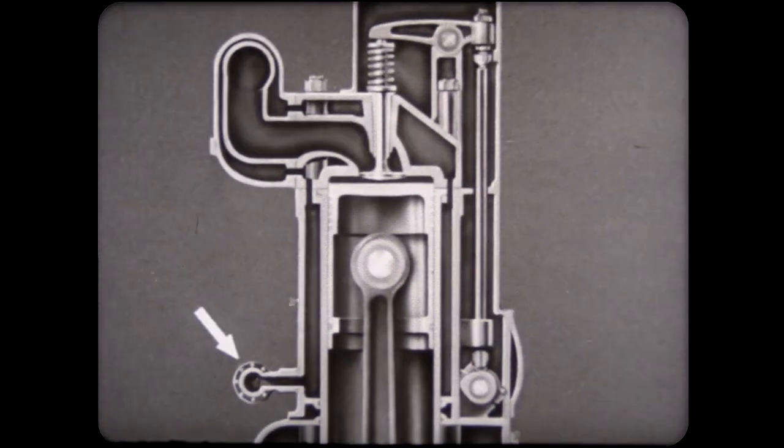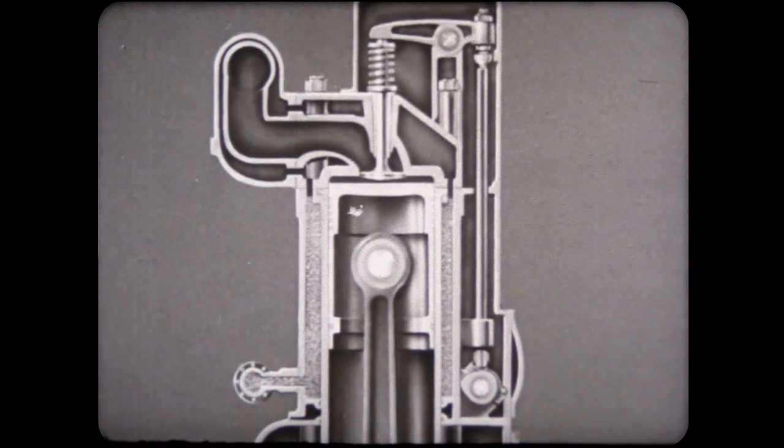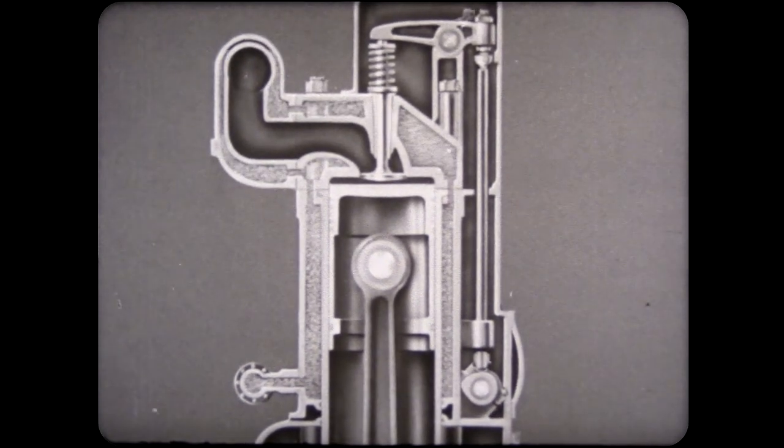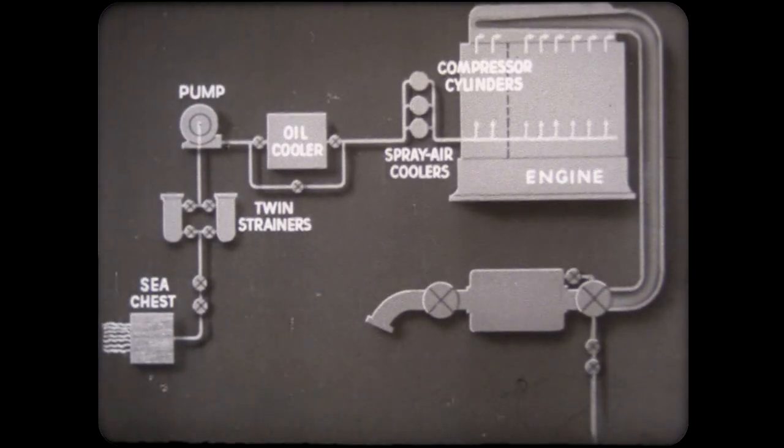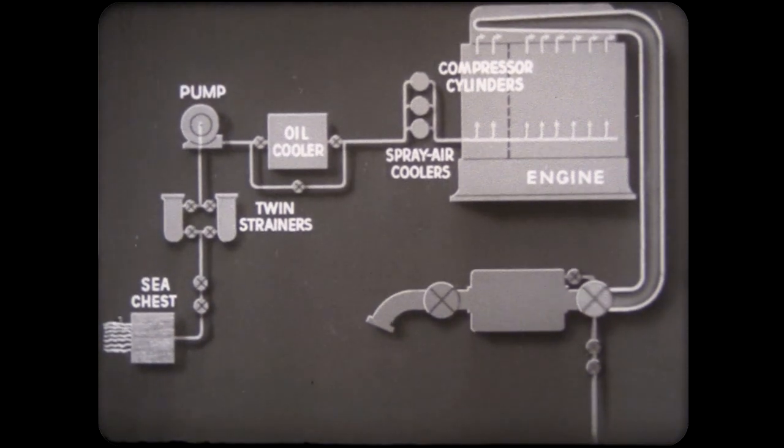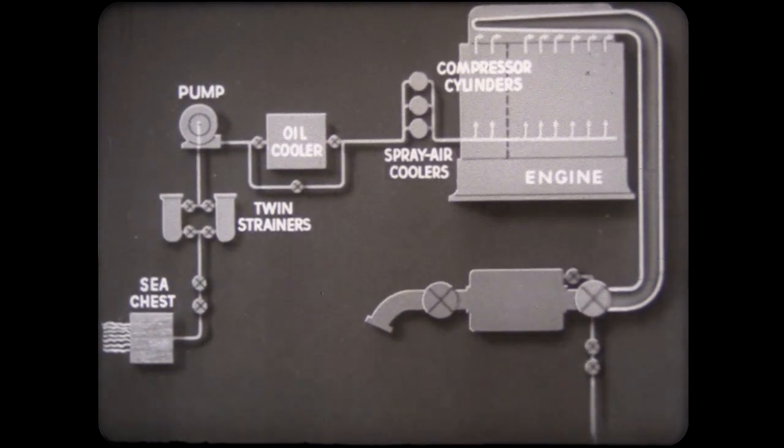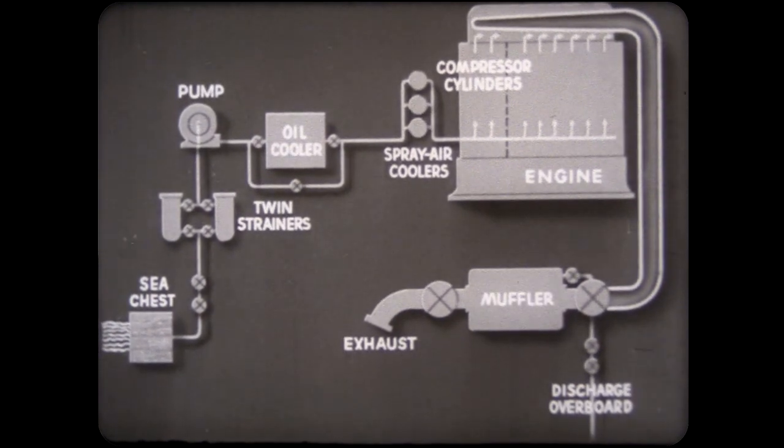Entering at the base of the cylinder water jackets, it cools the cylinder liner as it rises to the cylinder head. Having cooled the cylinder head with its valves and injector, the water passes through the water jacket surrounding the exhaust header. It may then be either discharged directly overboard or sprayed into the exhaust gases in the muffler.